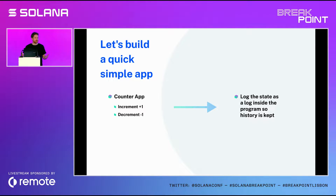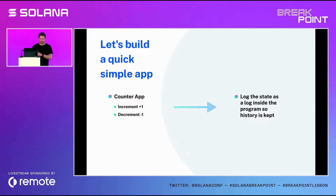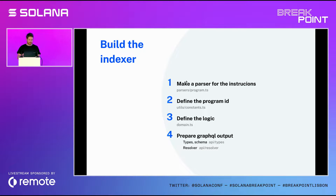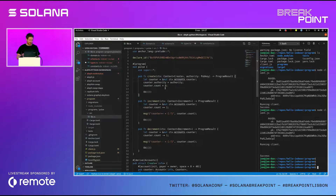To do a quick demo — we haven't released our full open-source framework for Solana indexing yet. What we'll do today is build a very simple, self-contained indexer, and all the source code will be made available on our Twitter later. We create a simple counter app which has a value that we can increment or decrement in the app or through a program. We log the state as a log inside the program so the history is kept, and we don't have to look at all the account state over time. Here is the code of our very simple program. We are using Anchor, obviously.